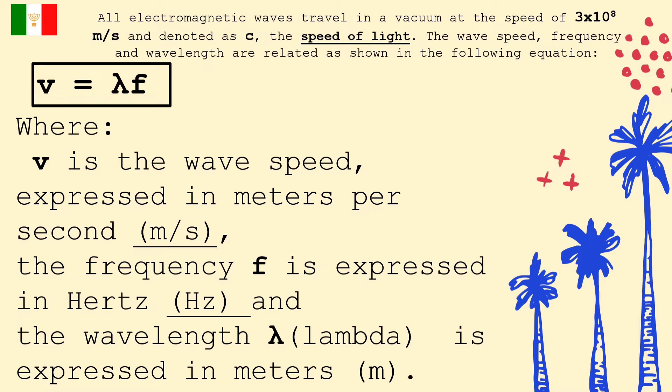Again, wavelength is the distance between corresponding points of two consecutive waves. Wavelength is usually denoted by the Greek letter lambda. It is equal to the speed of a wave divided by its frequency. So, we have the formula of wavelength is equal to V, or speed of the wave, divided by frequency.